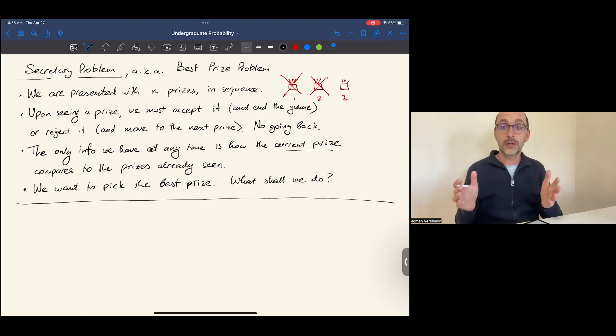First, we learn to reject the first prize, reject the second, reject the third, no matter how good they appear. Do this for the first k prizes. Then, accept the first prize that is better than those k.